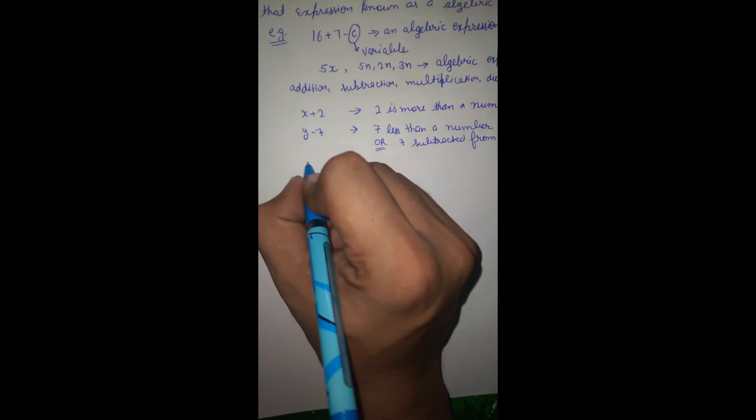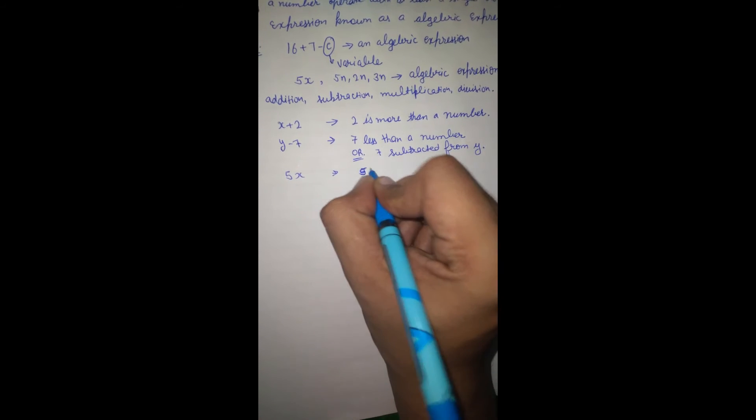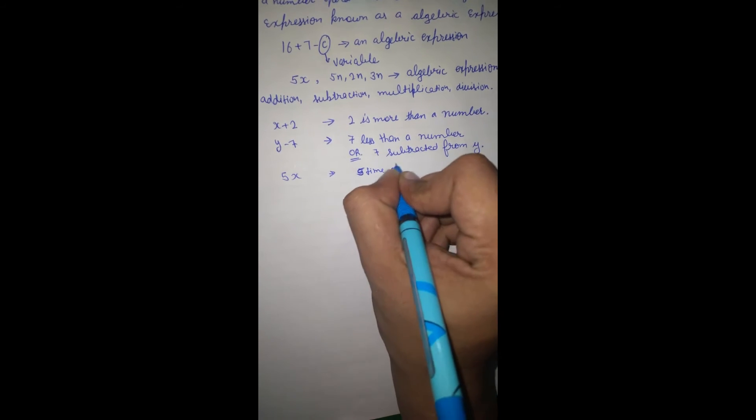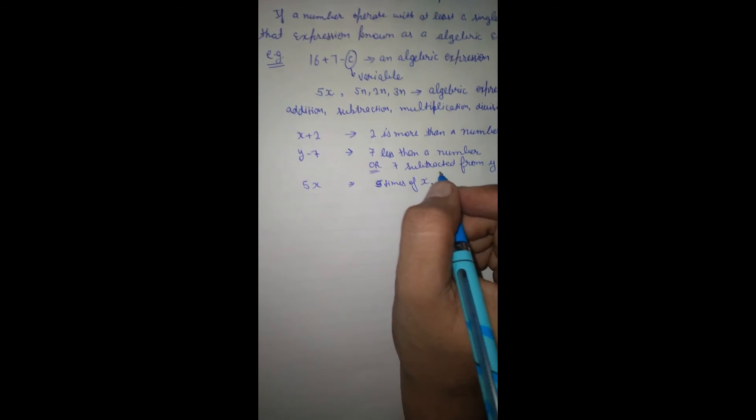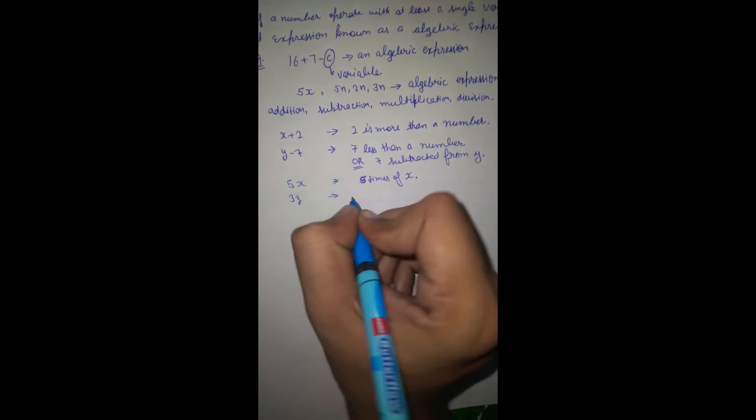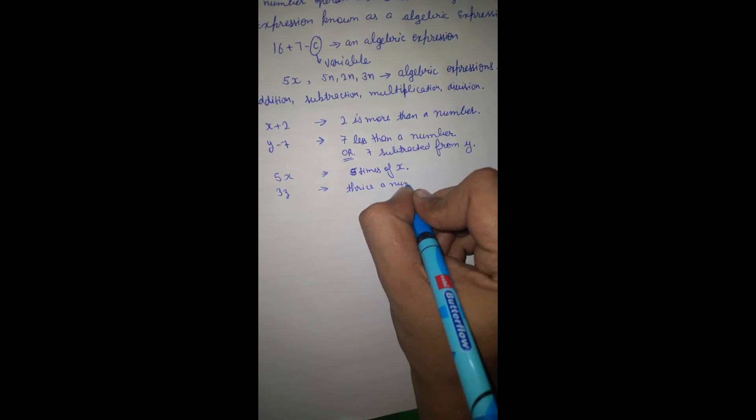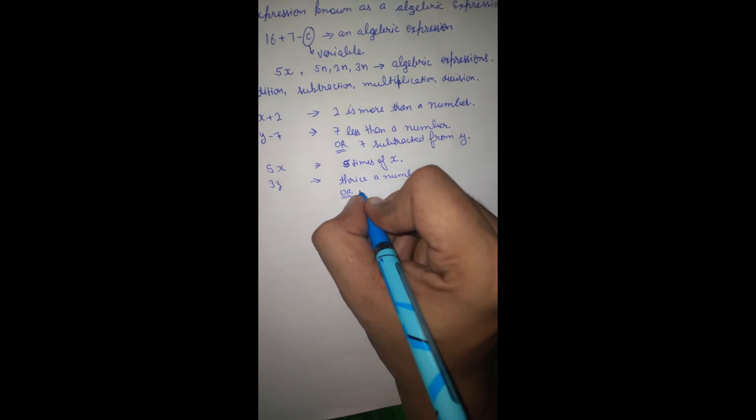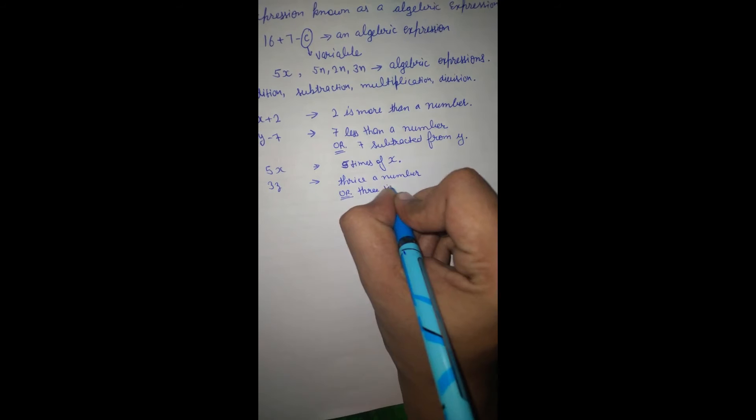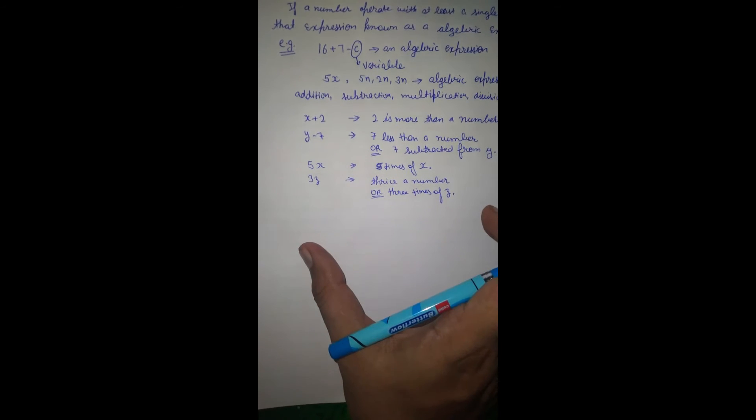Like if we have 5x, it means 5 times of x. If we have 3z, it means thrice a number or 3 times of z. In such a way, we represent these algebraic expressions.